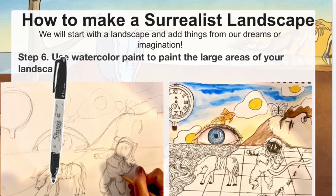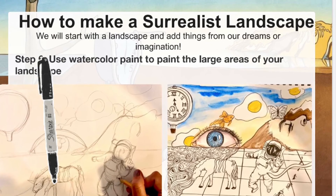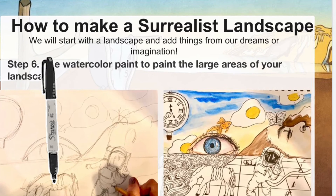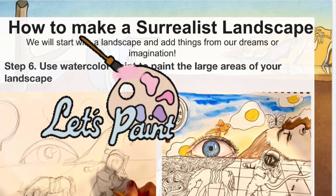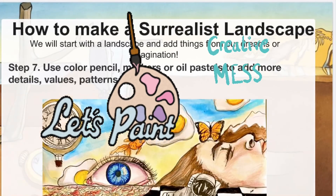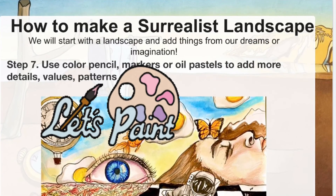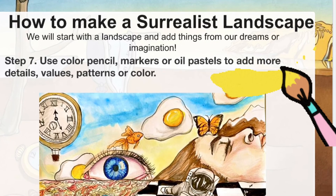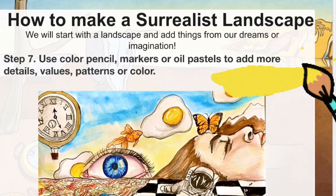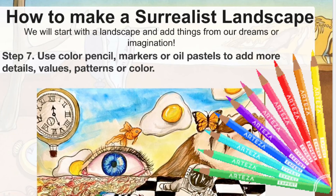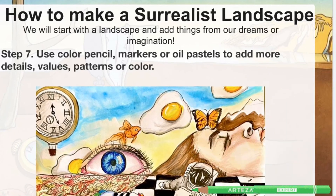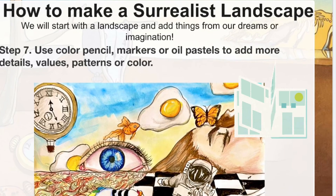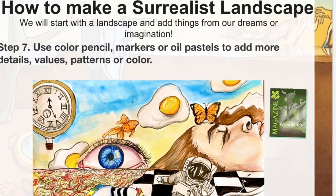After you've drawn everything with pencil, you can either trace over your lines with a Sharpie like I did, or you can start using watercolor paint to paint the large areas of color in your landscape. The colors can be realistic or abstract — it's really up to you. After I painted most of the areas and let my watercolor paint dry, I went back and added more details using colored pencils. You can also cut out pictures from magazines and add those to turn it into a collage. Really with surrealism, the possibilities are endless.